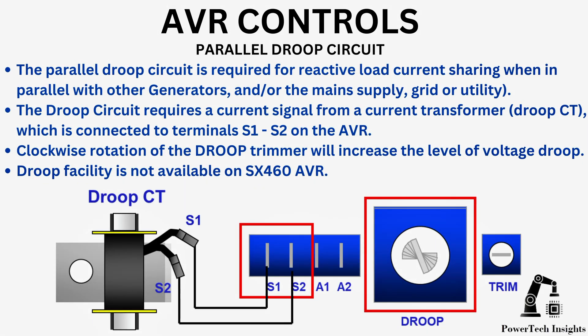AVR controls, parallel droop circuit. The parallel droop circuit is required for reactive load current sharing when in parallel with other generators and/or the main supply, grid, or utility. The droop circuit requires a current signal from a current transformer (droop CT), which is connected to terminals S1, S2 on the AVR. Clockwise rotation of the droop trimmer will increase the level of voltage droop. Droop facility is not available on SX460 AVR.